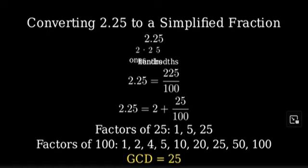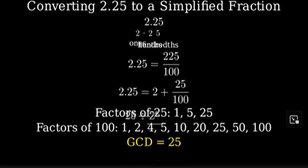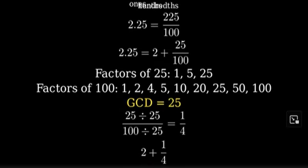Now we can simplify our fraction by dividing both the numerator and denominator by 25. 25 divided by 25 is 1, and 100 divided by 25 is 4. So our simplified mixed number is 2 plus 1 fourth.